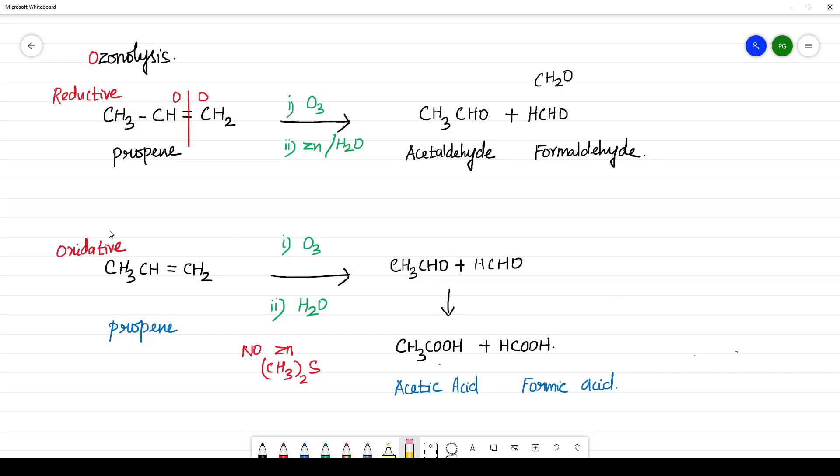Ozonolysis has two types: reductive ozonolysis and oxidative ozonolysis. If ozonolysis of propene takes place in presence of zinc, what happens? With aldehyde, the product stops. The reaction will be stopped up to this.